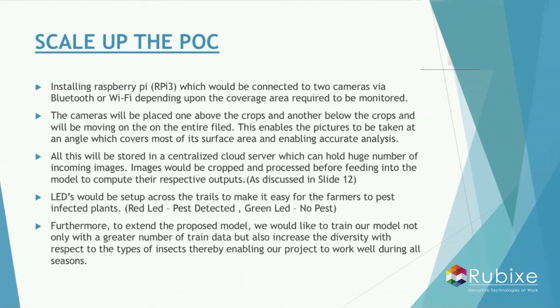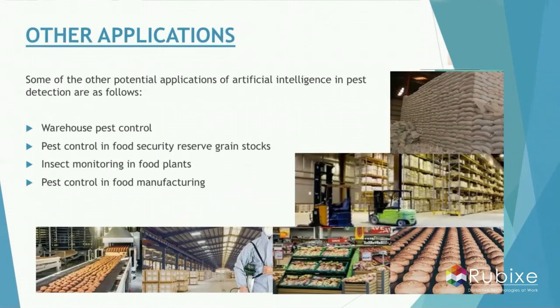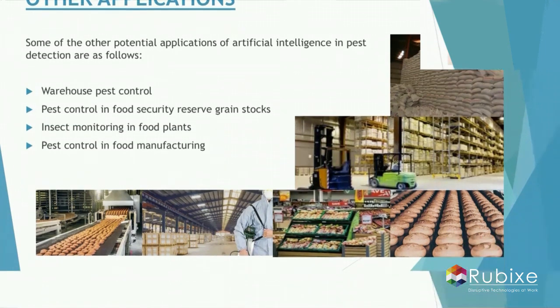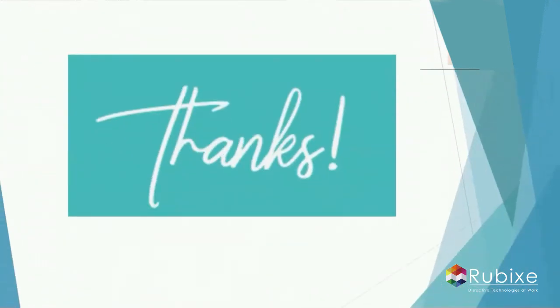We also plan to expand our pest detection model by training it on more data and increasing the diversity of insect types it can detect, so that it works well during all seasons. These are some other applications of the pest detection model — it can be used in warehouses for pest control, and also in food storage plants and food manufacturing plants. With this, we will close our demo.